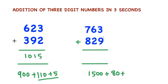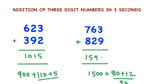Now it comes to the units place — 9 plus 3 is 12. Now 80 plus 12 is 92. 1500 plus 92 is 1592.